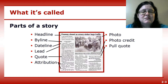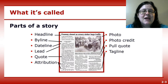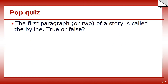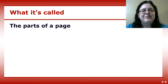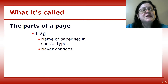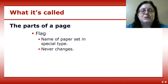It's pulled out of the paper to pull in readers. Then you have what's called the tagline. This is contact information for the reporter at the end of the story that allows readers to provide feedback. Beyond the parts of the story, there are a few parts of the newspaper itself that you should know. First is the flag. This is the paper's nameplate, the name of the paper, often set in special type.